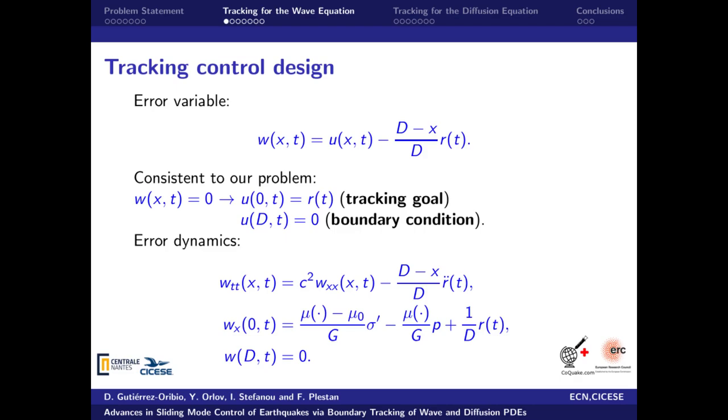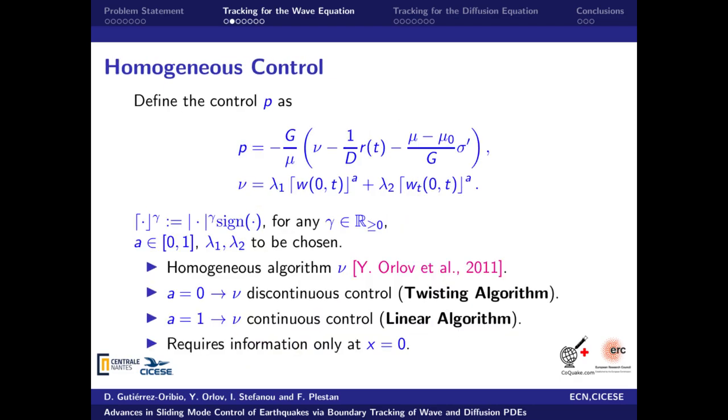Let us start with the wave equation control design. The first step is to introduce an error variable. Note how such an error is consistent with our tracking problem when it takes value of 0 and with the boundary condition at x equal to d. The error dynamics is then obtained where a new perturbation term appears on the wave equation due to the reference signal. The design control consists of feedback linearization terms and a homogeneous algorithm inspired by Orlov et al. 2011.